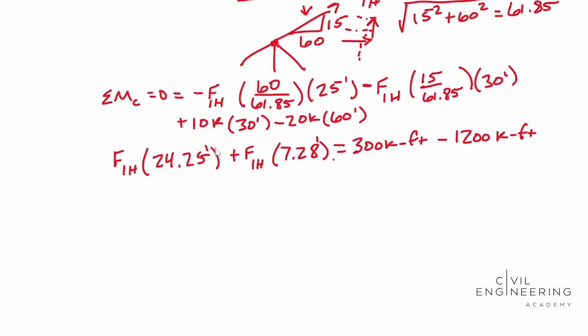If we simplify that just one more step more, we go FIH times 31.53, that's feet, is equal to negative 900 kip-feet.